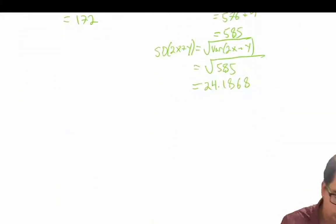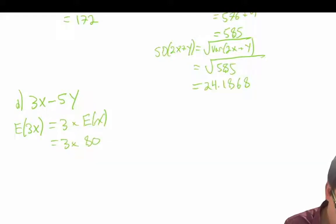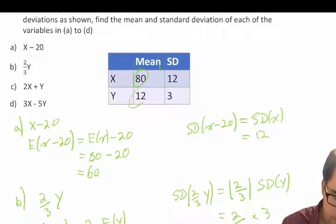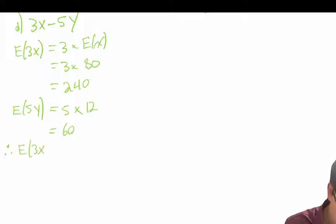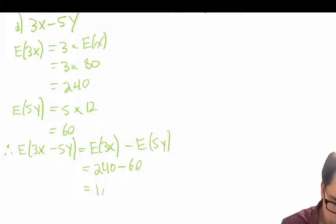Finally, question D: we're dealing with 3X minus 5Y, so there are a number of steps. Let's first find our expected value of 3X — that's 3 times our expected value of X, which is 3 times 80, equal to 240. Our expected value of 5Y is equal to 5 times our expected value of Y, which is 12, so 5 times 12 equals 60. Therefore, the expected value of 3X minus 5Y equals 240 minus 60, which is equal to 180.